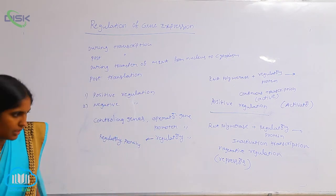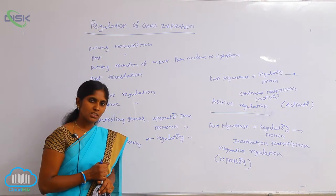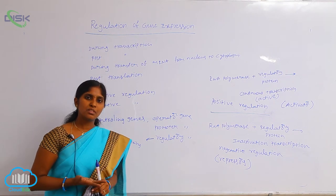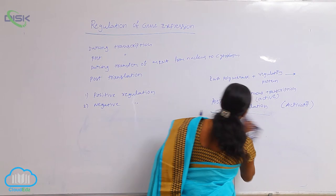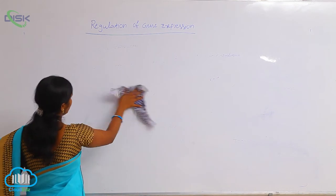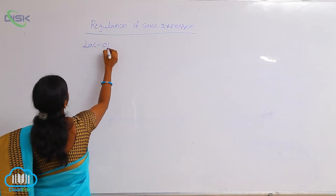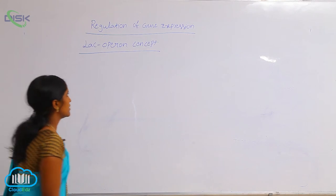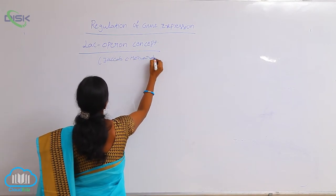In E. coli bacteria, lactose metabolism is the main source of energy. Lactose is metabolized into galactose and glucose in the presence of the enzyme beta-galactosidase. This beta-galactosidase enzyme is regulated by negative regulation during transcription, described in the form of the lac operon concept, postulated by two scientists, Jacob and Monod.